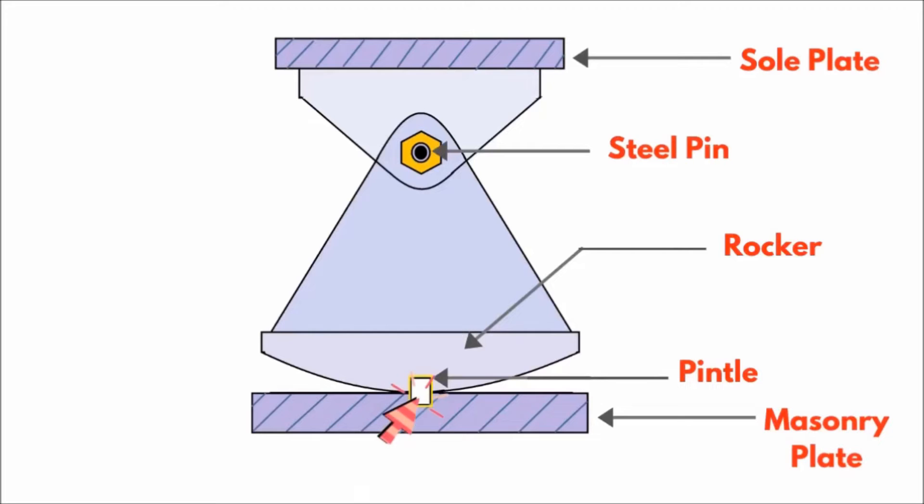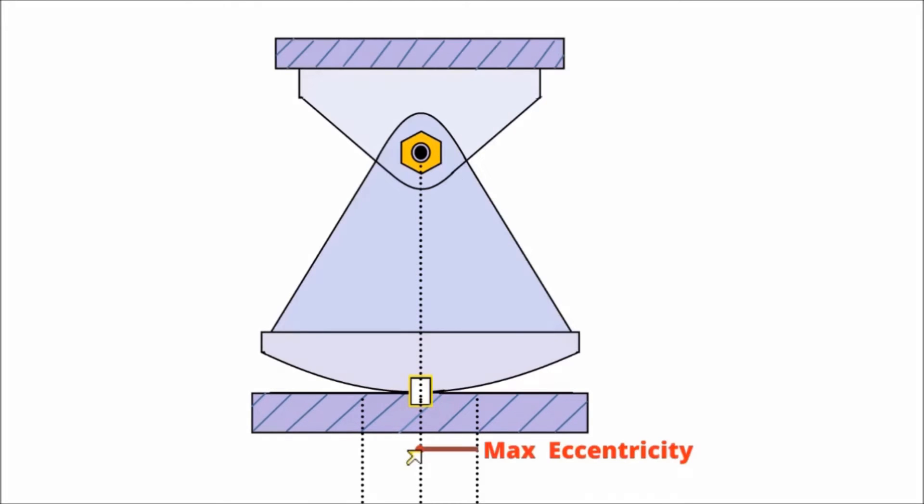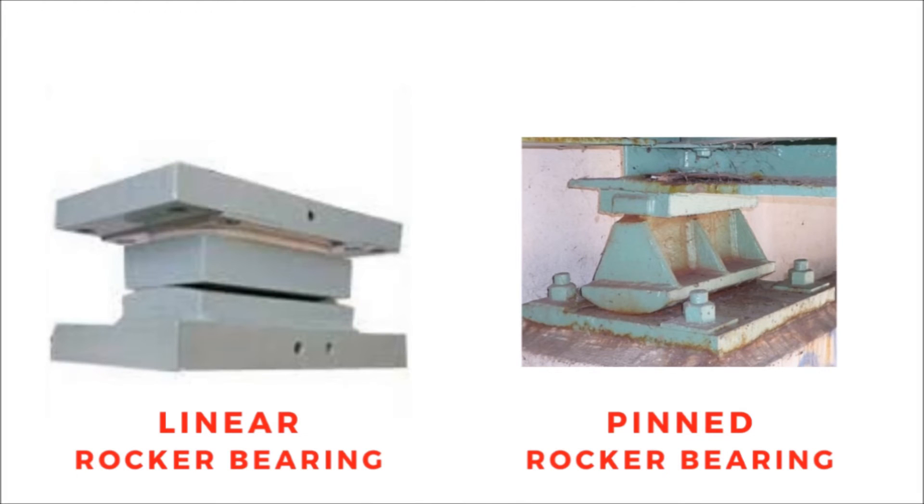The pin tail is a vertical pin which is driven into the masonry plate at the shop that prevents the rocker from sliding instead of rocking. This is the maximum eccentricity of the rocker bearing. Rocker bearings can be either fabricated without pin, which is linear rocker bearing, or with pin, which is called pinned rocker bearing.